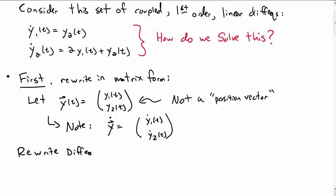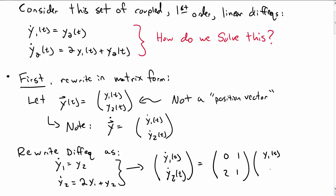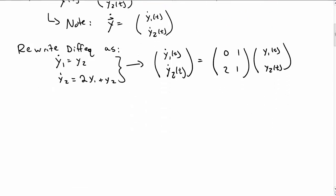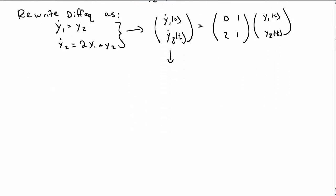So then we can rewrite our differential equation above in a matrix form. We had y1 dot equals y2, y2 dot is 2y1 plus y2. Let's rewrite that as y1 dot, y2 dot equals the matrix 0, 1, 2, 1 times y1, y2. You can check that this gives the same differential equation, except now it's in a matrix form.